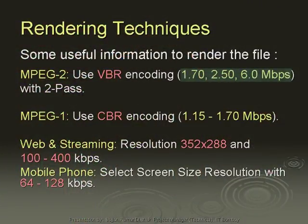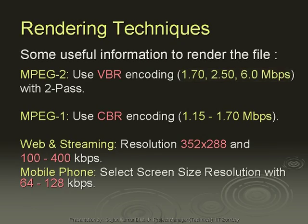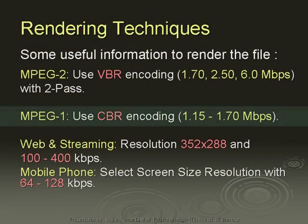If you have only one hour of video, increase the bit rate because the DVD has a capacity of 4.7 GB. But if you have a three-hour video, decrease this value with 2-pass encoding. MPEG VBR has 2-pass encoding — one pass for video and one for audio. First VBR encodes the video, then encodes the audio, then merges the file. For MPEG-1, you can use VBR or CBR, but you should use CBR because bit rates are low, so there is no need to use VBR encoding for MPEG-1 format.